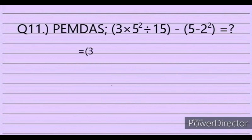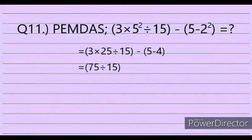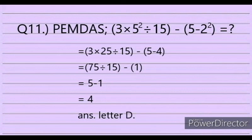Solution: First, 3 times 25 divided by 15, minus (5 minus 4). That equals 75 divided by 15, minus 1, which equals 5 minus 1, equals 4. The answer is letter D.